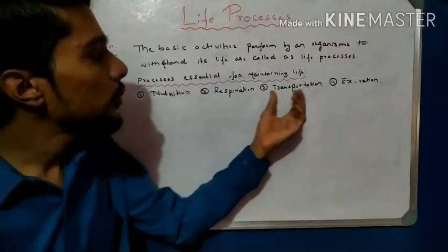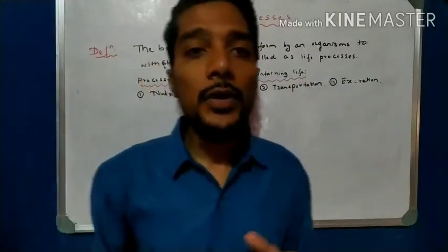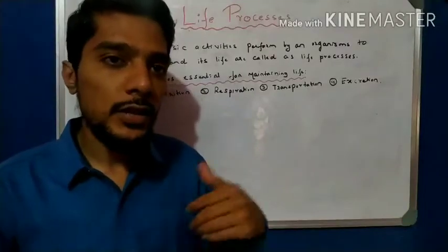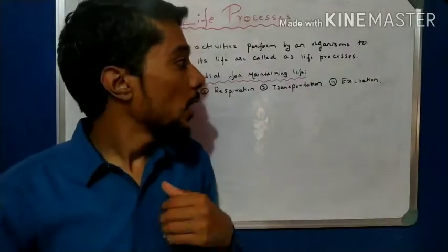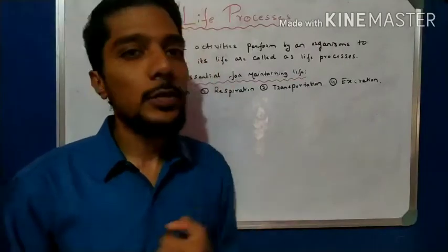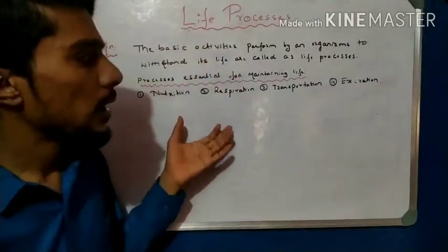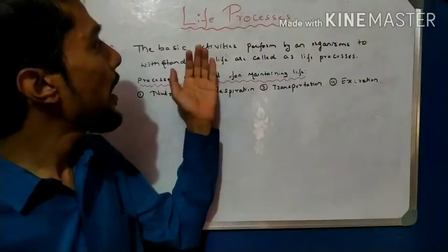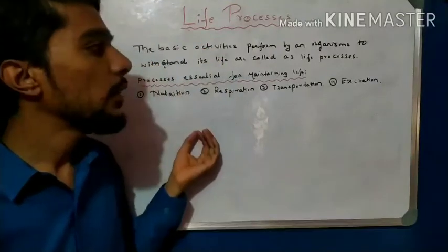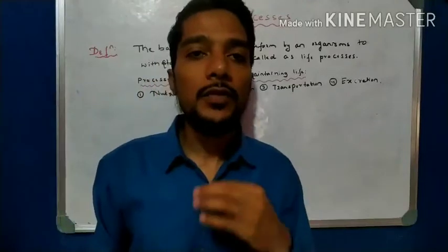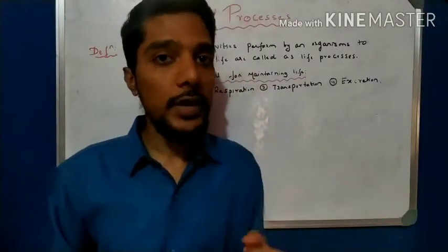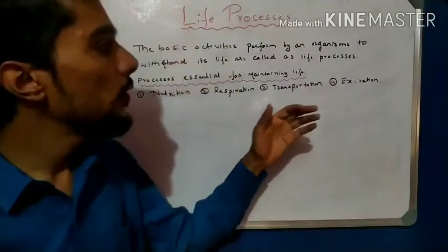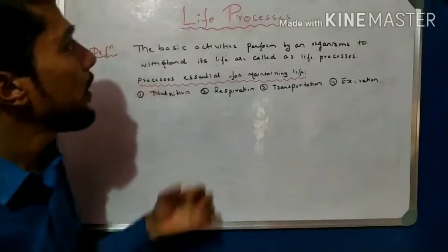In this chapter we will learn four things: nutrition, respiration, transportation, and excretion — how each process takes place. If all these processes run correctly and properly, we call them basic activities. If any one of these activities does not run properly, it leads to the formation of disease, and the organism's growth or life may be affected.